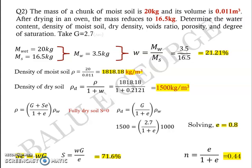Though this question looks quite simple, try to work this on your own, and try to see if you are getting similar values for answers: 21, 1818, 1500, 0.8, etc.